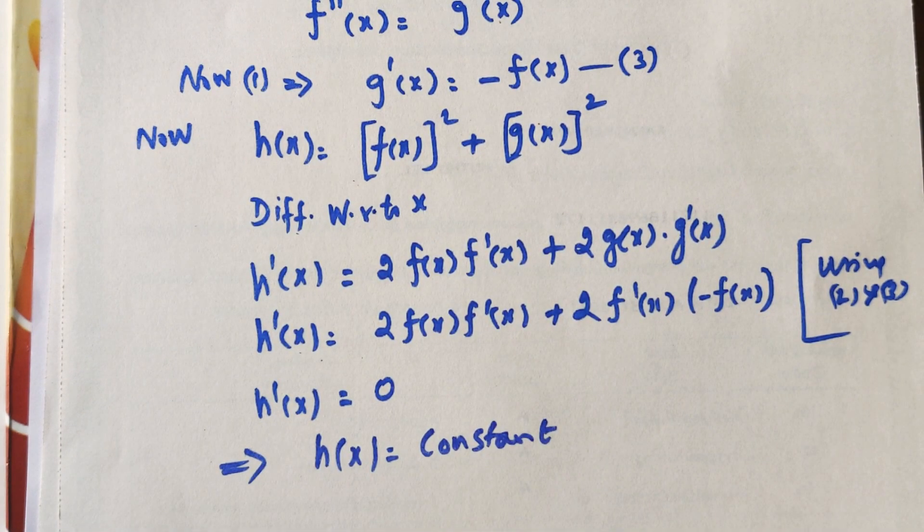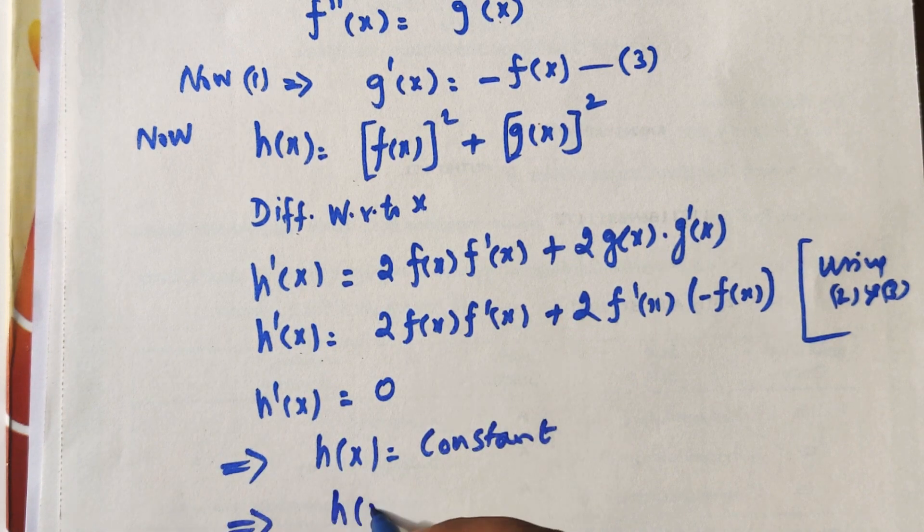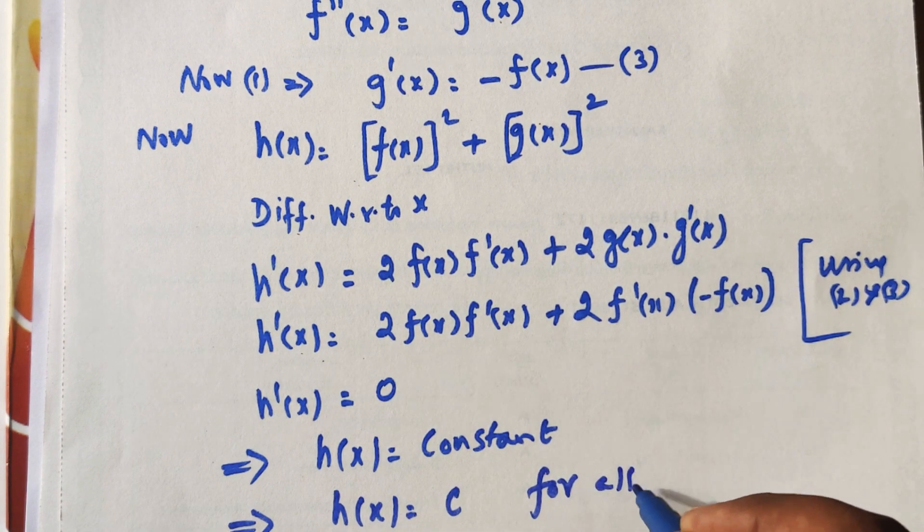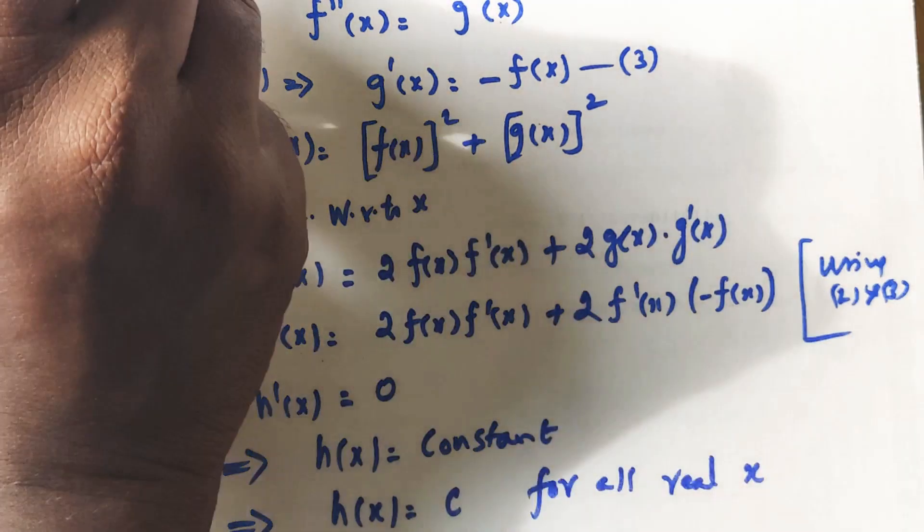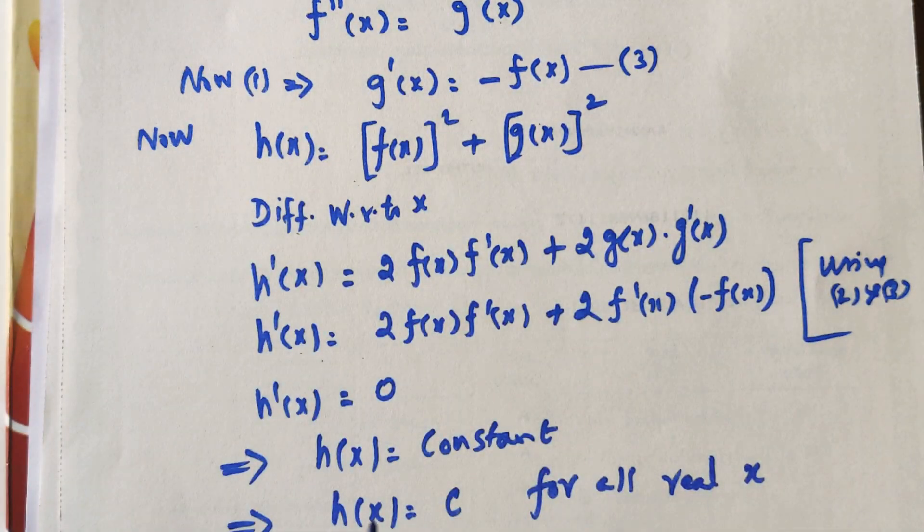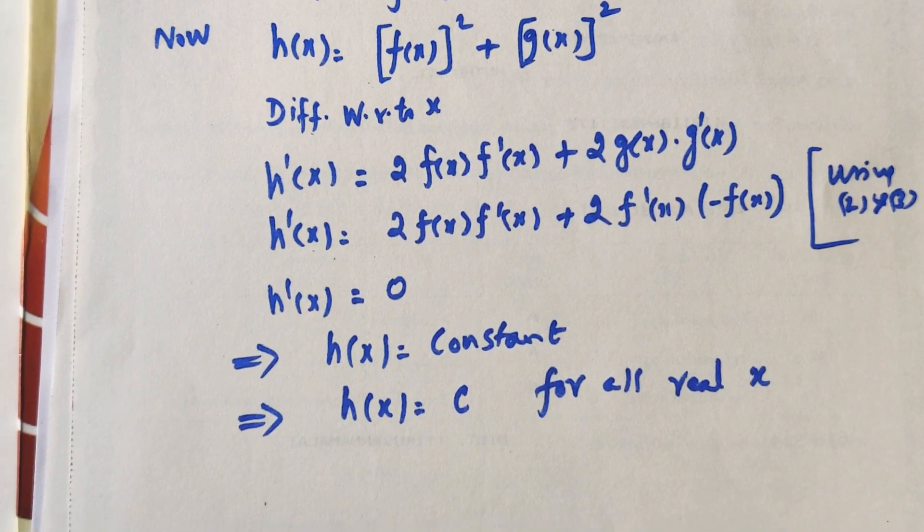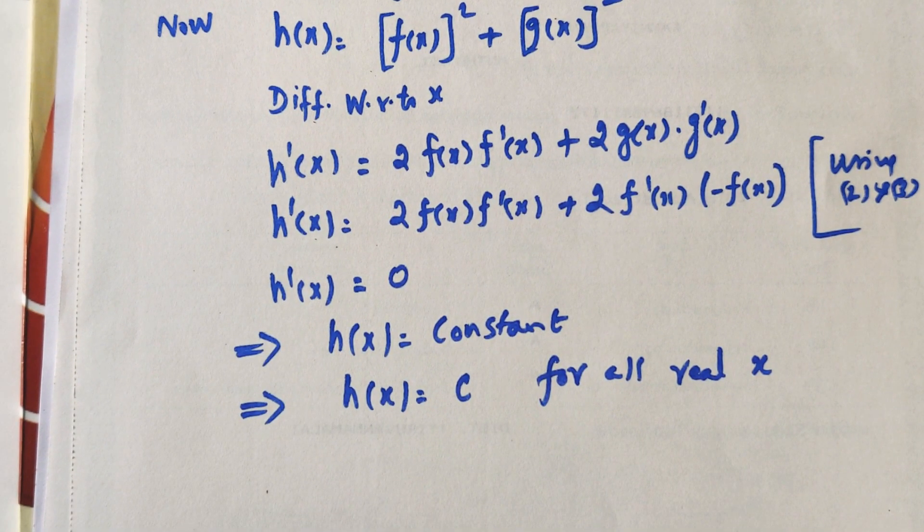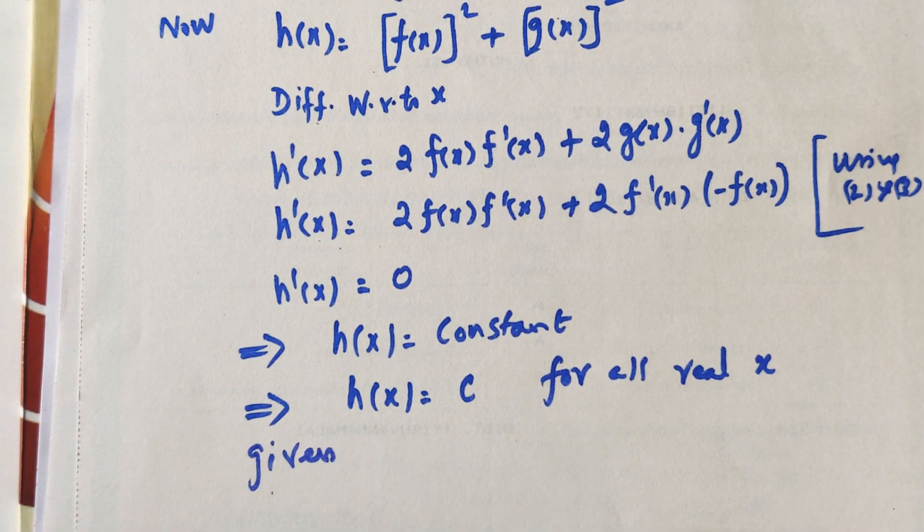The derivative of a constant is 0. This implies H of X equals constant C for all real X.